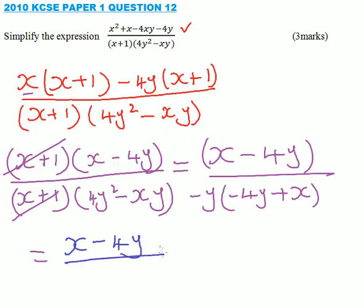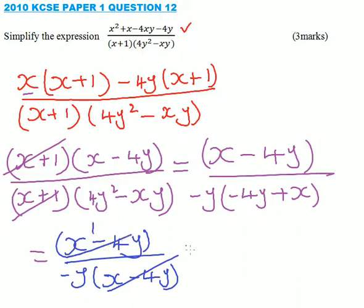You divide by minus y into bracket, x minus 4y close the bracket. So x minus 4y and x minus 4y divide and you get 1.